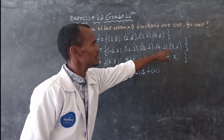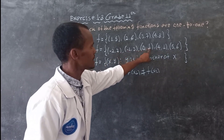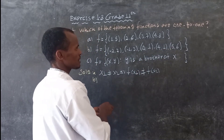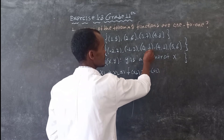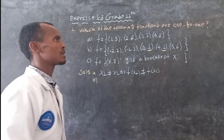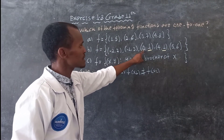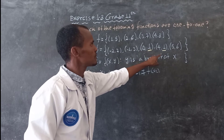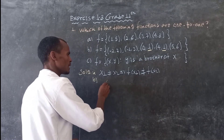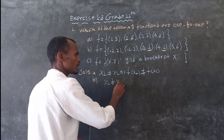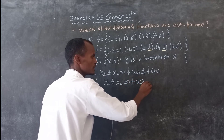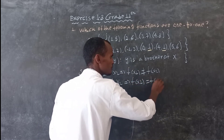This condition is not equal to x2. This function is a one-to-one function. This function is within the domain. Now we are going to fix this function, equal to f of x2.